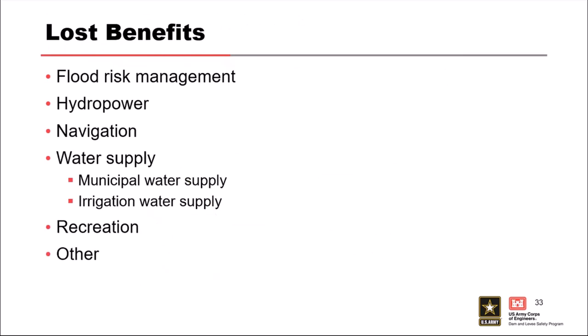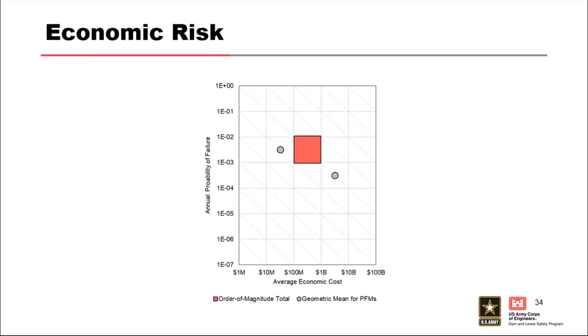Loss of benefits — things like the dam no longer providing hydropower, water supply, or other functions once it's breached — represent real losses to the nation but are not included in LifeSim. There are other methods to capture these. If a dam overtops with very little downstream flooding but loses its hydropower, that could be a significant loss not covered here. For economic risk, we don't have the same tolerable risk guidelines within USACE as we do for life loss.